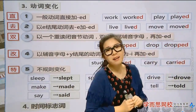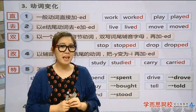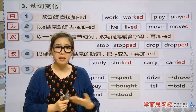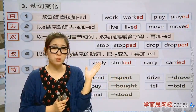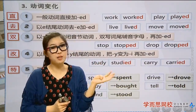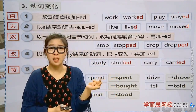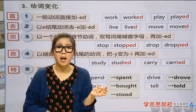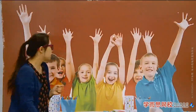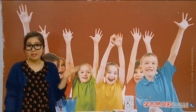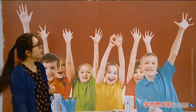Now for the simpler part: time markers for simple past tense. These are easy to identify — just a few types. First: 'yesterday.' Then the 'last' series: last week, last month, etc. Also 'in the past.' And 'ago' and similar expressions.